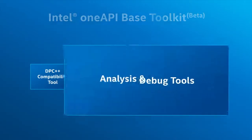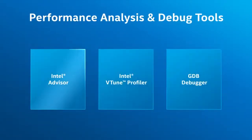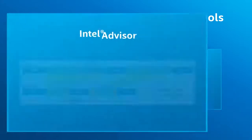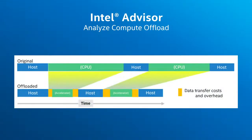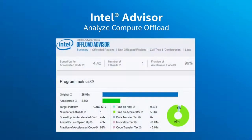With advanced analysis and debug tools, developers can analyze, optimize and debug applications across architectures. Intel Advisor identifies which parts of the code can most profitably be offloaded for acceleration. The tool also pinpoints accelerator bottlenecks such as memory, cache, compute and data transfer.